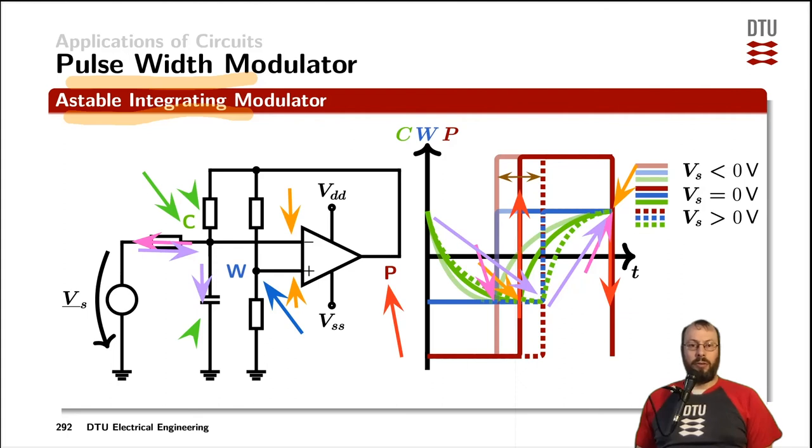That modulator is useful, for example, in audio amplifiers where the extra source voltage could, for example, be the audio signal, and we use the pulses to drive the power stage in a switch mode audio power amplifier, or also in other power electronics where we control the output voltage of a power supply through the pulse width of those signals.